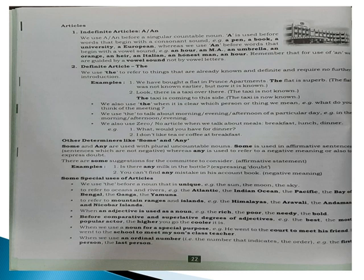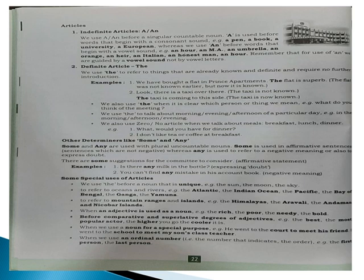Examples of 'a': 'a pen' (pa- consonant sound), 'a book' (ba- consonant sound). Examples of 'an': 'an hour' — the word 'hour' is spelled h-o-u-r but pronounced with an 'o' vowel sound, so we use 'an'. 'An MA' — the letter M is pronounced 'em', starting with a vowel sound. 'An umbrella' — 'u' vowel sound. 'An orange' — 'o' vowel sound. Whenever the word begins with a vowel sound, we use the article 'an'.